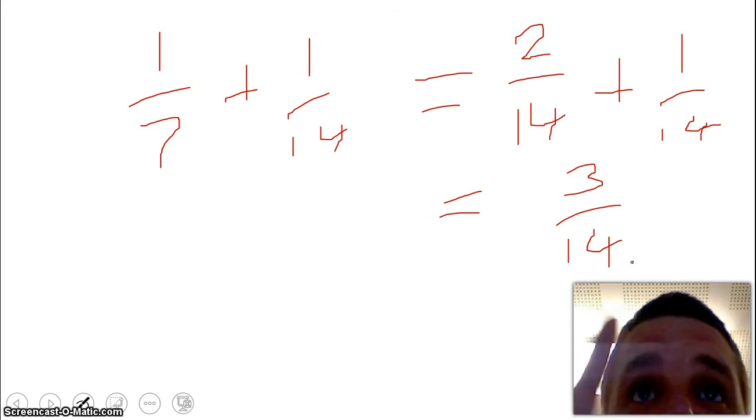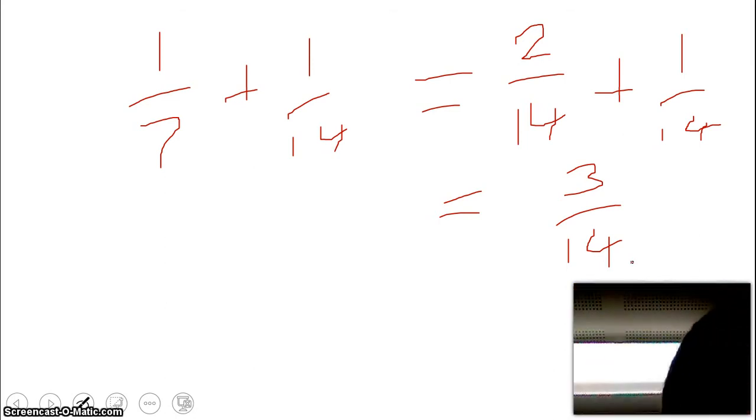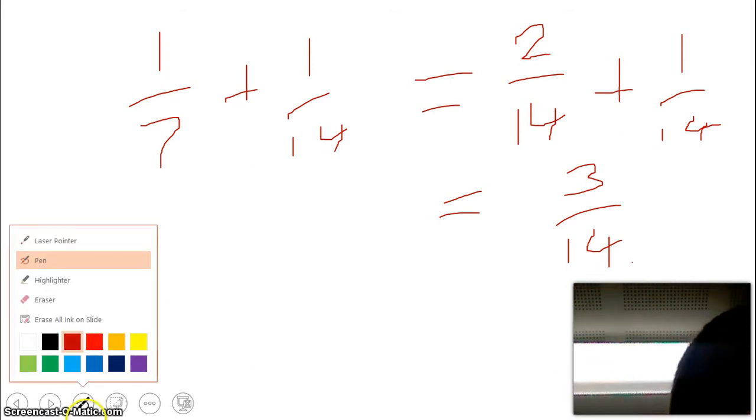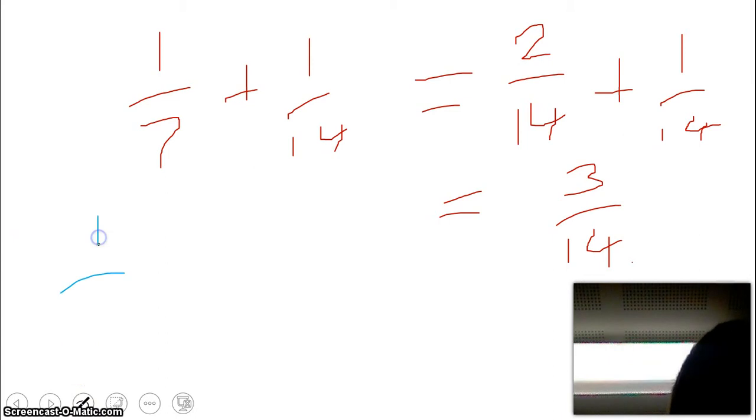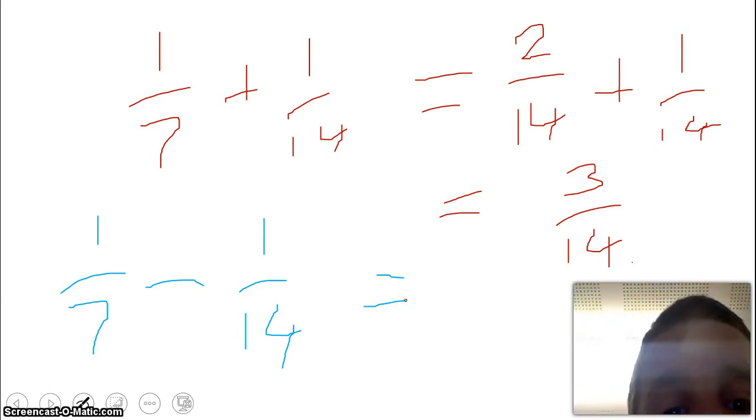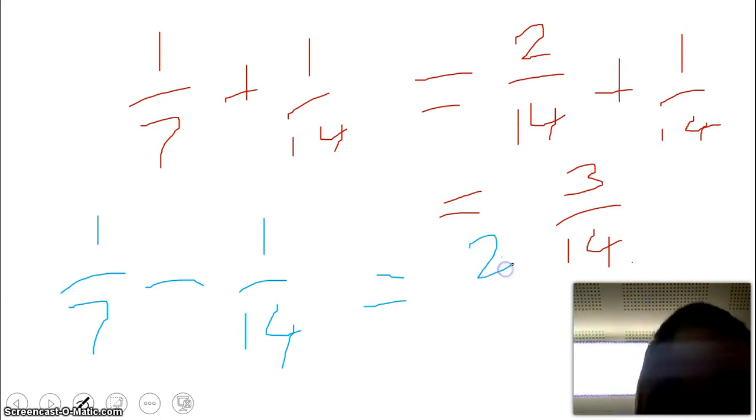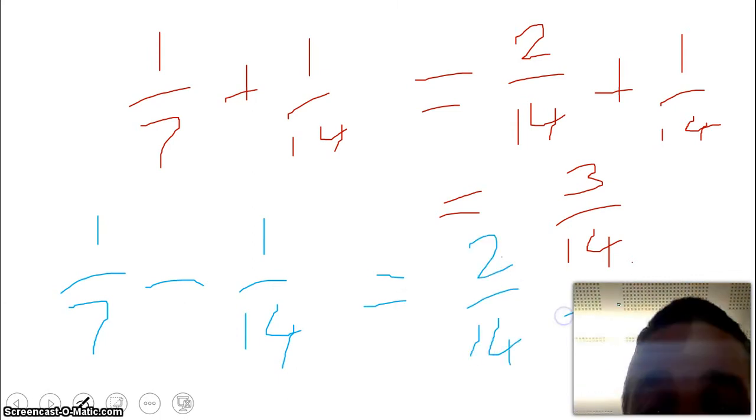Once we've done that, we add and subtract the denominators. We could do exactly the same if it was, for example, 1 over 7 take away 1 over 14. So we could go 2 over 14 take away 1 over 14, which equals 1 out of 14.